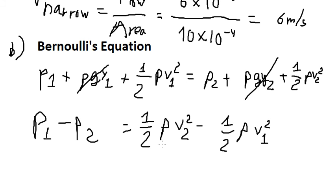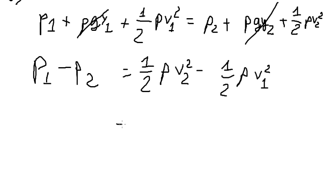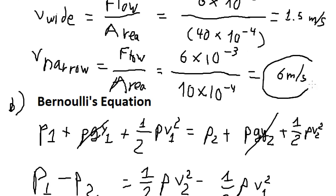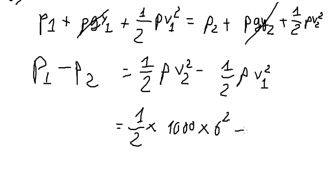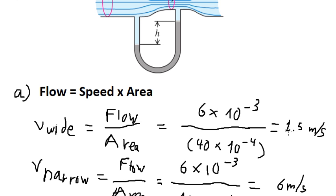We know that the density of the water is about 1,000. So we got about 1 over 2 multiplied with 1,000. And we have V2 is about 6. This is about this number here. So here we have V2 minus 1 over 2 multiply with 1,000 multiply with 1.5.